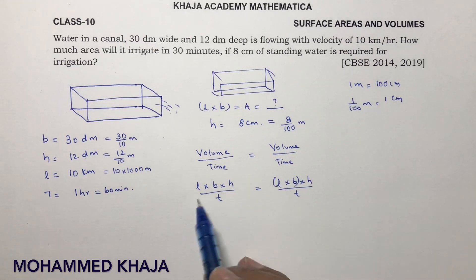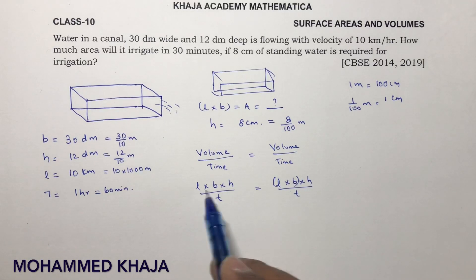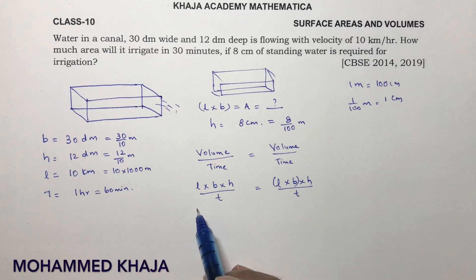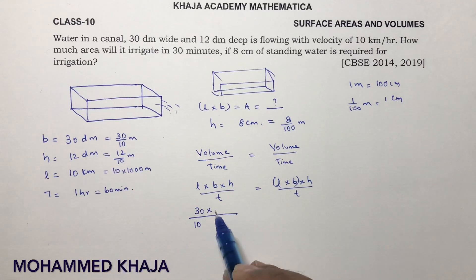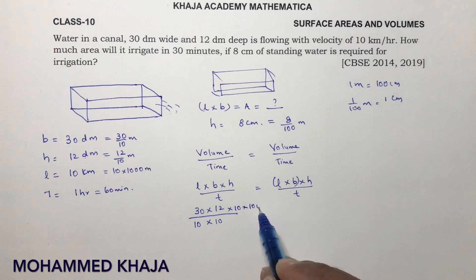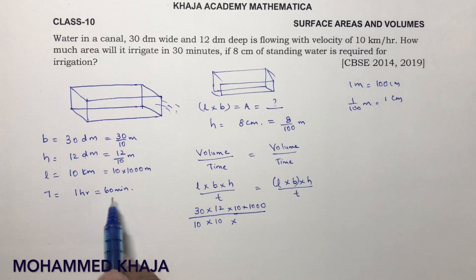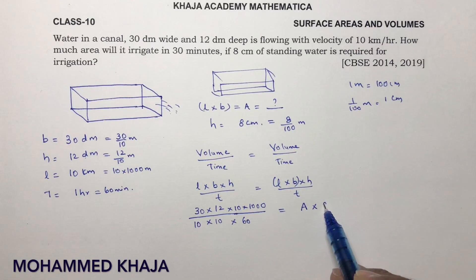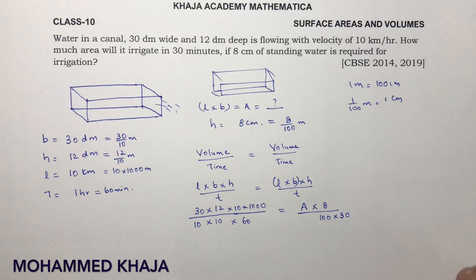Now substituting all values: l = 30/10 meters, breadth = 12/10 meters, height = 10 × 1000 meters, time = 60 minutes on the left side. On the right side, l into b is the area, height = 8/100 meters, and time = 30 minutes.